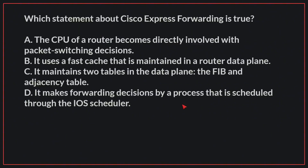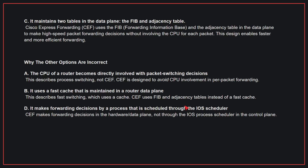Which statement about Cisco Express Forwarding is true? The correct answer is C. Cisco Express Forwarding uses the FIB and the adjacency table in the data plane to make high-speed packet forwarding decisions without involving the CPU for each packet. This design enables faster and more efficient forwarding.